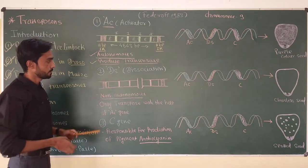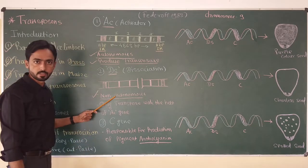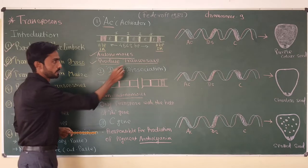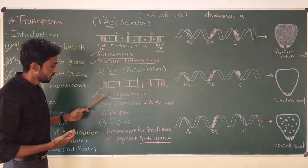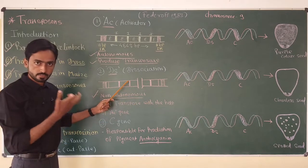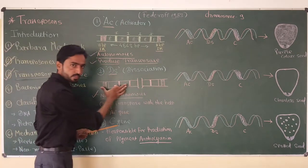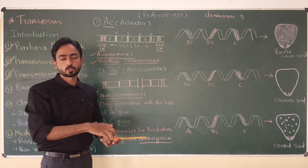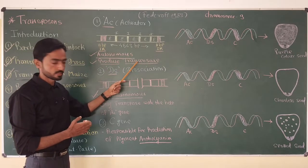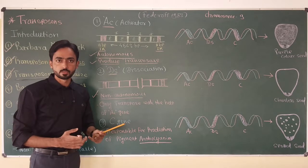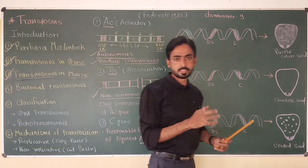The second element present in the maize plant is DS, or the Dissociation element. This sequence can move from one side of the chromosome to another only with the help of the AC gene. If the DS element wants to move, it requires help from the AC element. The AC element provides the transposase enzyme to the DS, enabling DS to change position in the maize chromosome.